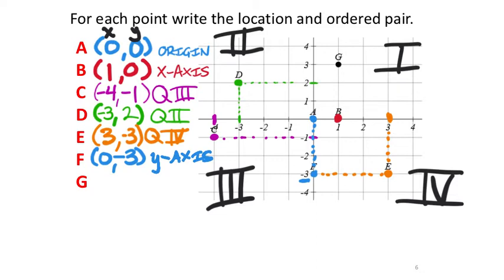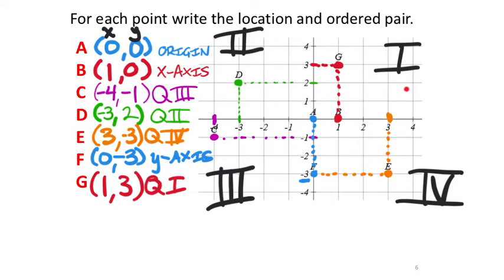Point G — its x value, following the line down to the x-axis, is 1. Following over to the y-axis, the corresponding y value is positive 3. So G is at (1, 3), and that's in quadrant 1. That's what it wants when it asks for the location and the ordered pair.